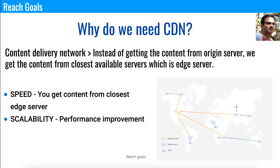The second benefit is scalability. If you have hundreds and thousands of customers all wanting to get content from the origin server, the origin server is going to get high traffic and become overloaded very fast. Instead, if you have content in the closest locations, traffic to the origin server is gradually reduced and you can scale your system across thousands of users.